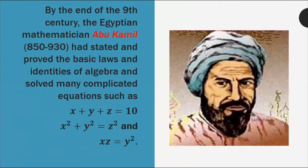By the end of the 9th century, the Egyptian mathematician Abu Kamil, 850 to 930, had started and proved the basic laws and identities of algebra and solved many complicated equations. His contributions include the solution of equations such as x plus y equals z, x squared plus y squared equals z squared, and xz equals y squared.